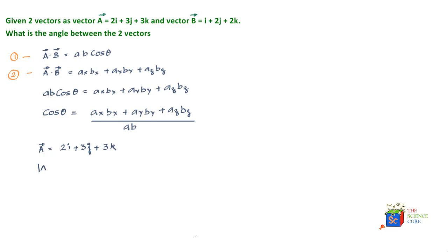So the magnitude of vector A is equal to the square root of 2 squared plus 3 squared plus 3 squared, which is equal to about 4.7 units. We have vector B shown as i plus 2j plus 2k.